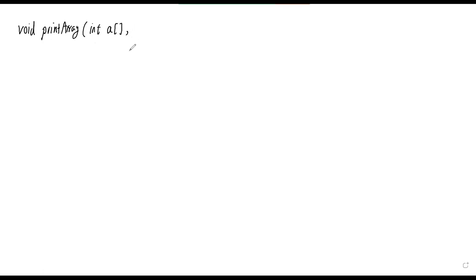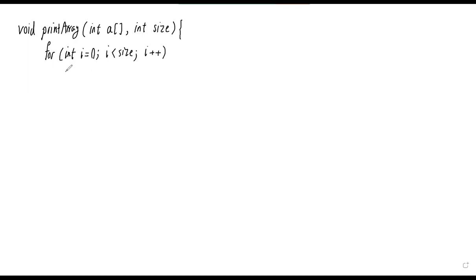Let's call that `a`. And you should know that in C++, whenever we pass an array to a function, we pass its size as a separate argument, so `int size`. The implementation is very simple — there would be a loop that goes through the elements of the array one by one and outputs them on the console. So a for loop: `for int i = 0; i < size; i++`. For each i, we output `array[i]`, maybe put some space between them, and then go to the next line. Whenever I have an array of type integer, I can call this function and it prints all the values to the console.